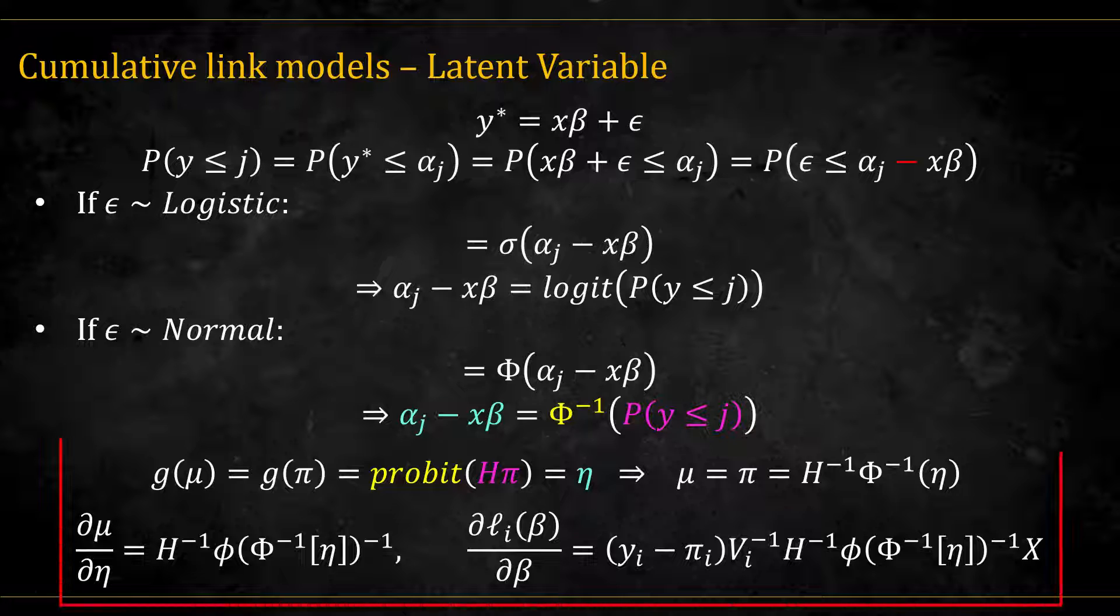For the probit link function, the previous analysis is changed only by the fact that now we need the derivative of the inverse cdf. Turns out, this is equal to this thing over here. Again this is a diagonal matrix.